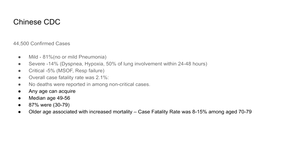A large Chinese study of 44,500 confirmed cases found that 81 percent were mild — meaning no or mild signs of pneumonia. Fourteen percent were severe — those patients had shortness of breath, low oxygen saturation, and 50 percent lung involvement within 24 to 48 hours of deteriorating. Five percent were critical, meaning multi-system organ failure: respiratory failure, kidney failure, liver failure, heart failure, etc. The overall case fatality rate was 2.1 percent in that study.